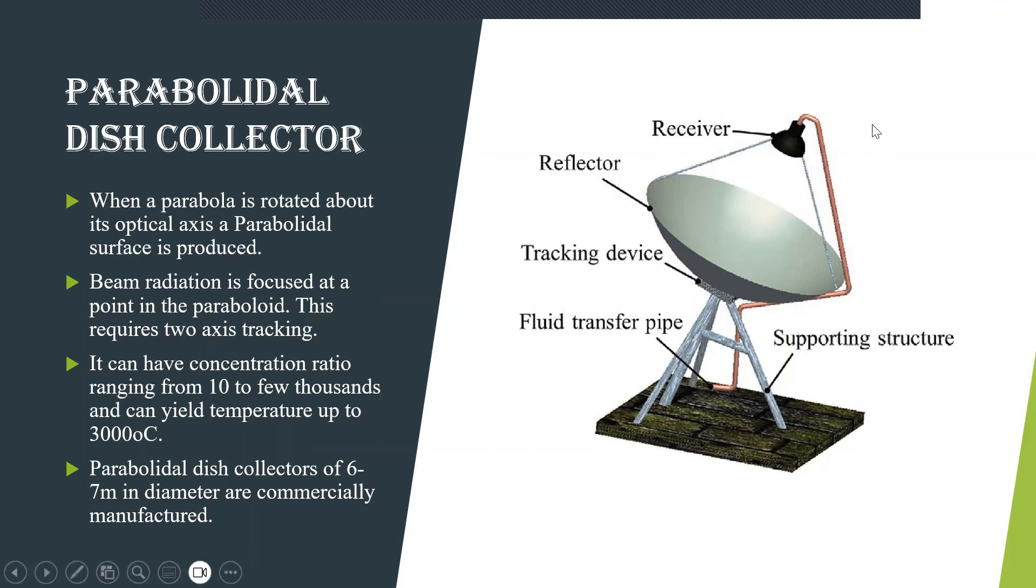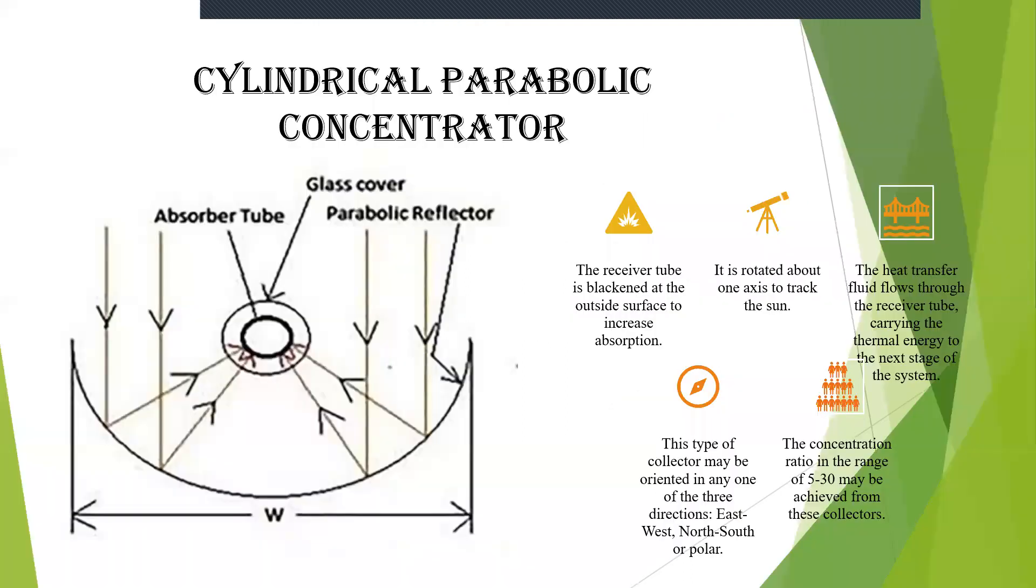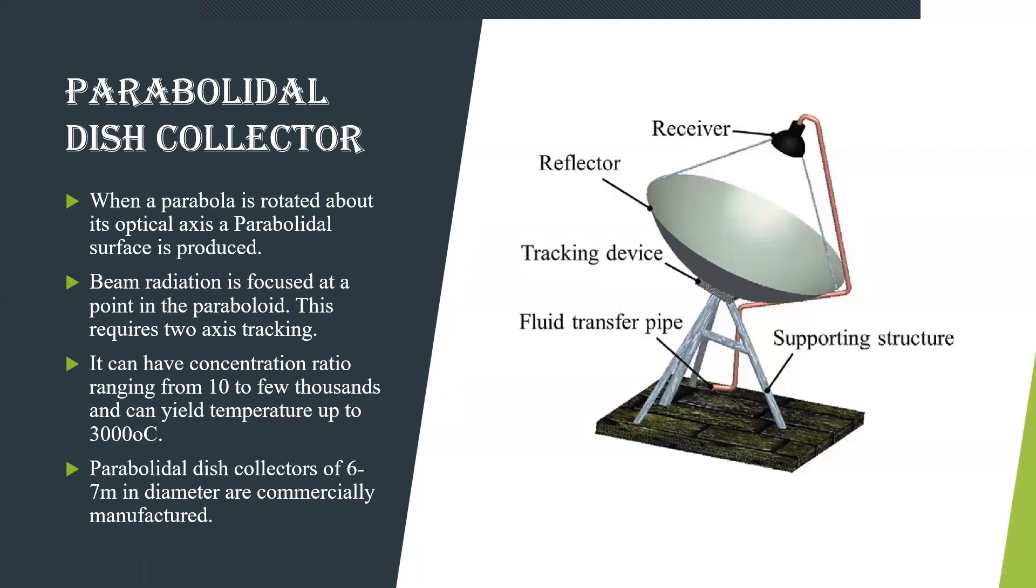This requires two axis for tracking. That is it can have a ratio that is concentration. Here you have 5 to 30 concentration ratio. Here the concentration ratio will range from 10 to some thousands, so that the temperature that you are yielding because of this parabolic dish collector will be 3000 degrees Celsius. With a small piece of paraboloidal dish collector it ensures that you are yielding more high amount of temperature or high amount of concentration ratio.